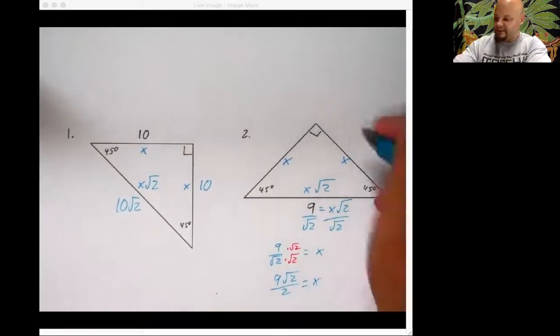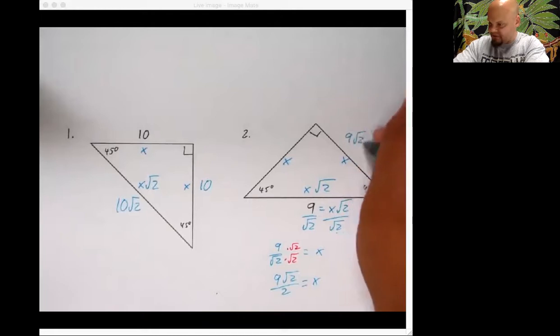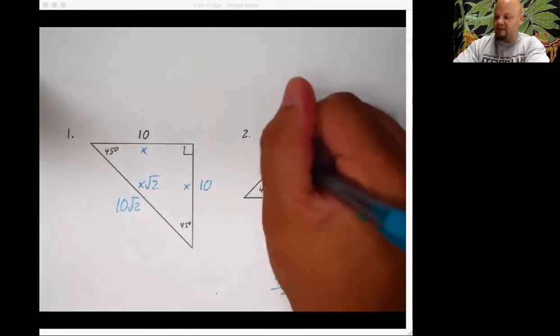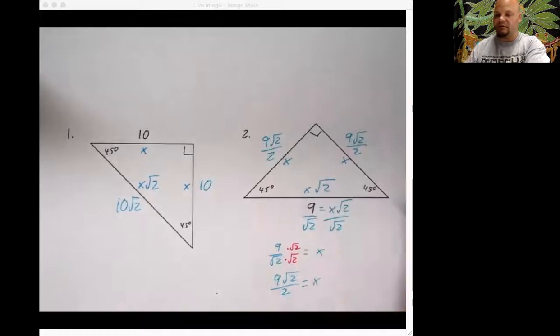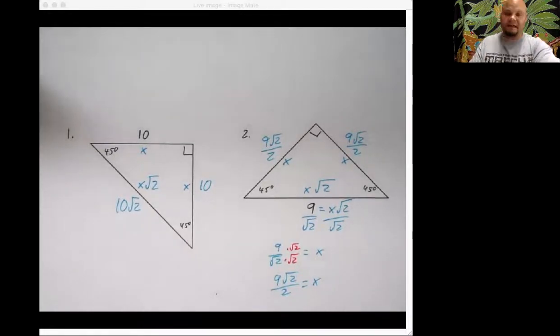So that'll be 9 root 2 over 2, and that's equal to X. Okay, well, what does that mean? That means this side is 9 root 2 over 2 long, and 9 root 2 over 2 long over here, which is a real number. Like, we can put that in our calculator and find out how long that is. I'm not doing that right now. That's that. That right there. That right there. It's 45, 45, 90 degree triangles.